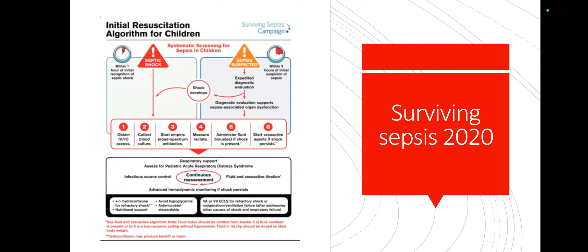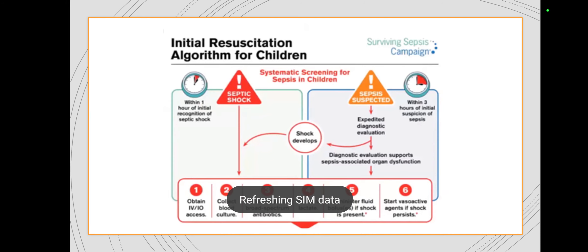This is the Surviving Sepsis 2020 guidance, published early in 2021, with different pathways compared to old practices. If you've got a child where you're suspecting sepsis but they are not in septic shock — blood pressure possibly stable, not needing inotropic support — you can have up to three hours to assess and initiate your Sepsis 6 pathway, with time to review results. If you've got a child you think is in septic shock, you should treat within the first hour of recognition. In both pathways, you gain IV or IO access — the difference is urgency.